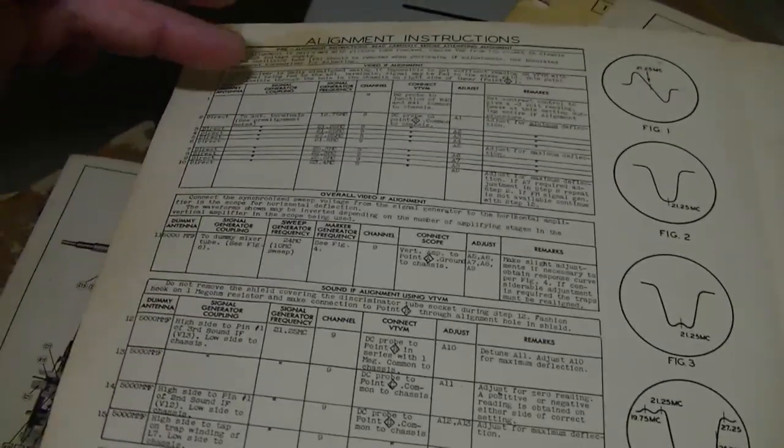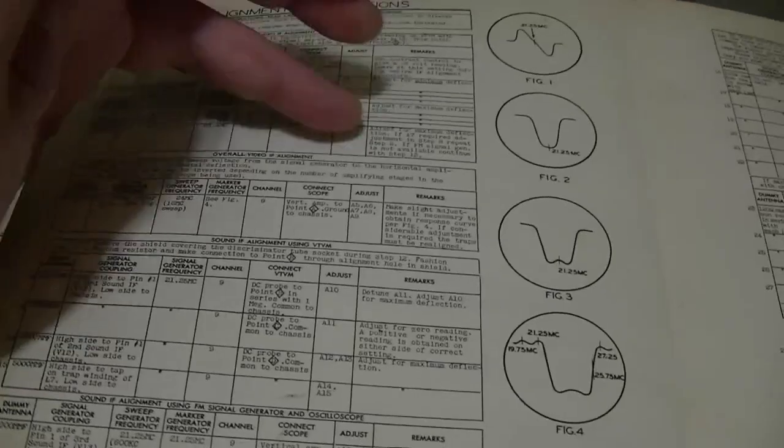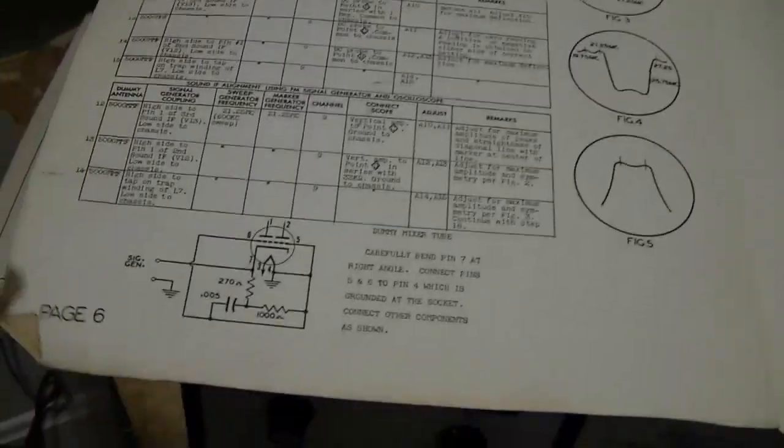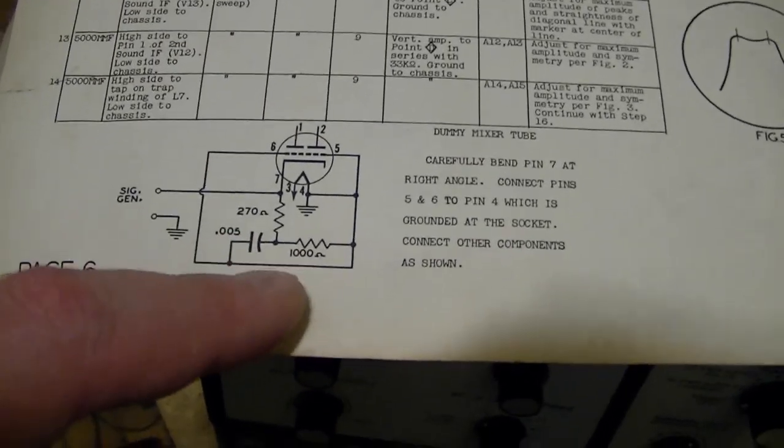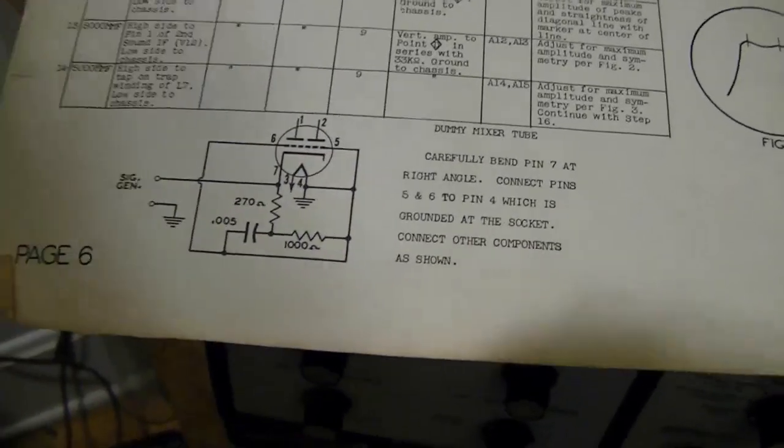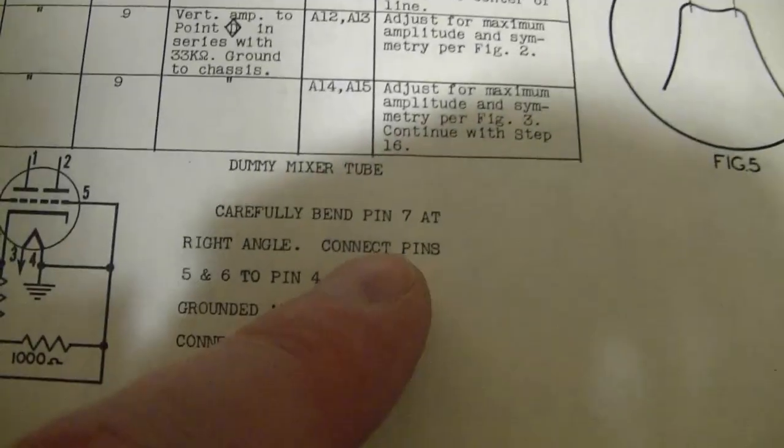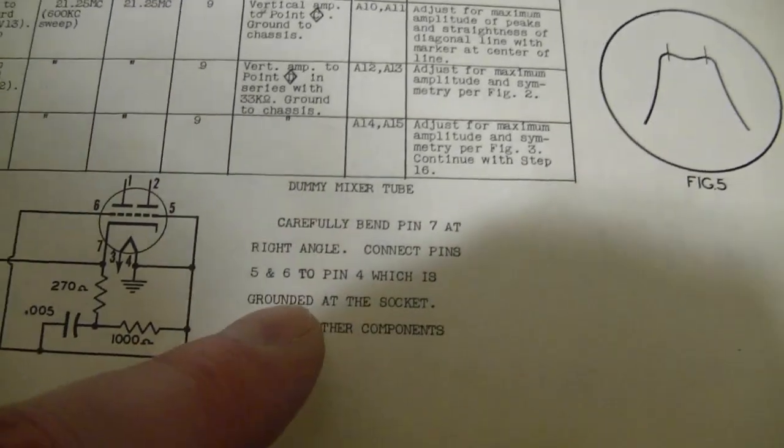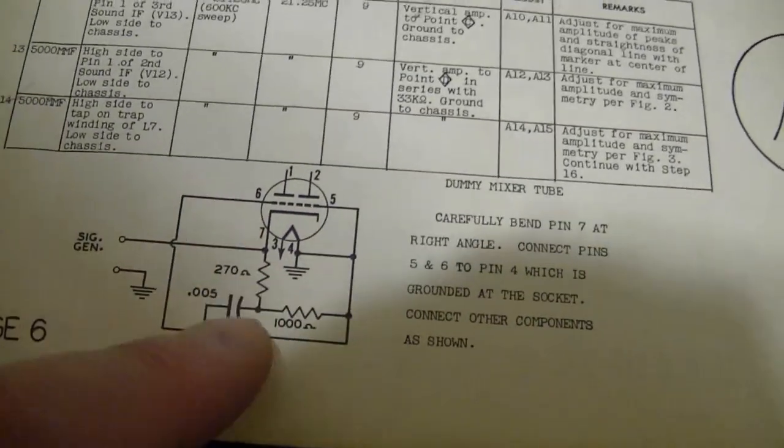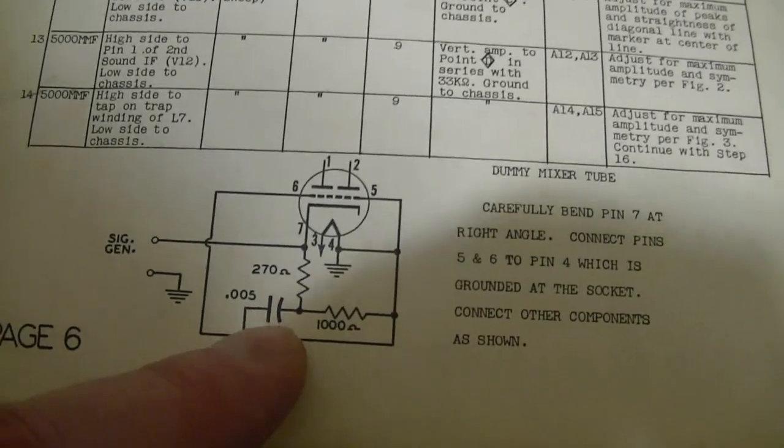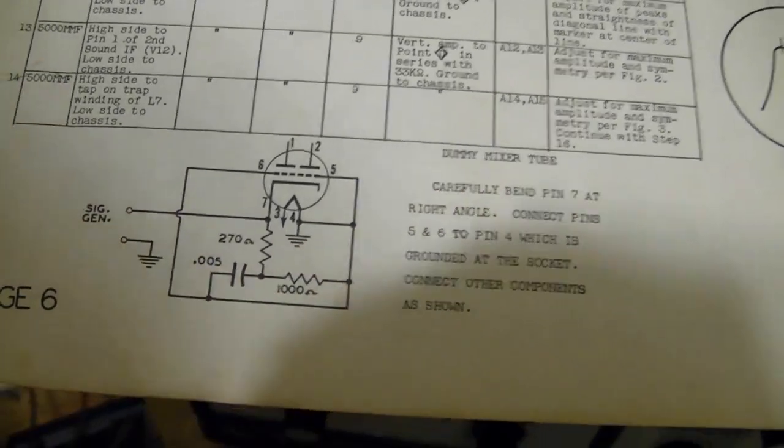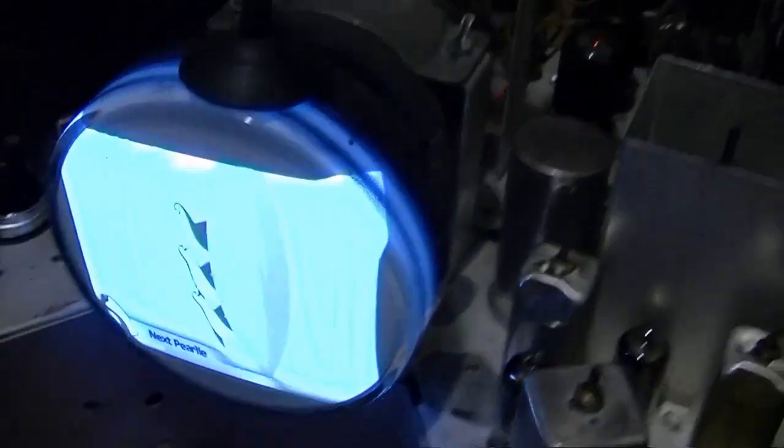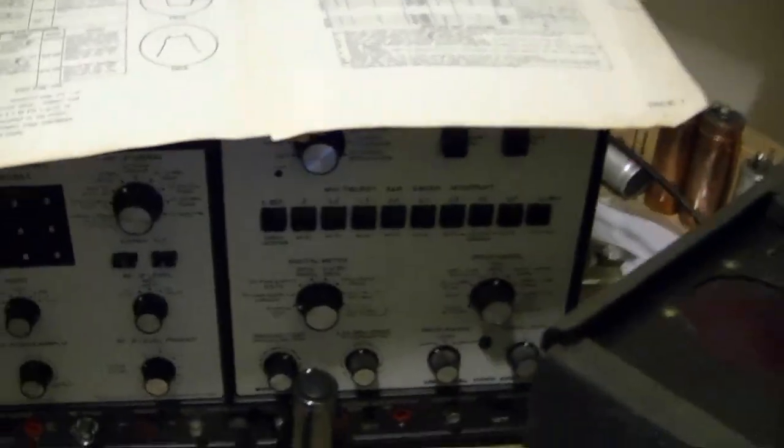This isn't too bad - you just feed the signal into the antenna terminals and adjust these coils for a min or a max. But to do a visual overall check, you have to take a tube and modify it and stick it into the set. For example, they say you have to bend pin 7 at a right angle and replace one of the 6J6s on the tuner with it. I haven't gone through all that. All the coils seem to peak fine. The picture seems great, so I'm not inclined to do it if I don't have to.